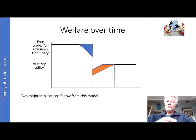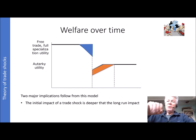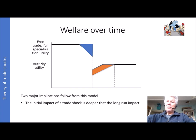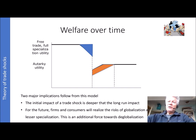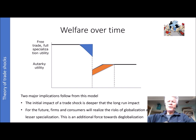Two major implications follow from this simple model. The first is that the initial impact of a trade shock is deeper than the long-run impact — there is a possible overreaction when looking at the first initial numbers of an economy stopping international trade. The second is that for the future, firms and consumers will realize the risks of globalization and see the benefits of lesser specialization. Policy will become more conservative, firms will also be more conservative in buying from abroad, and that is an additional force towards deglobalization.